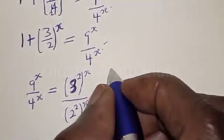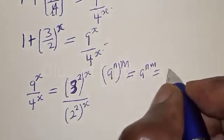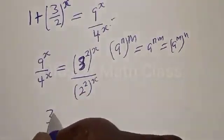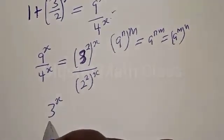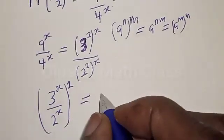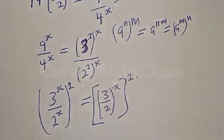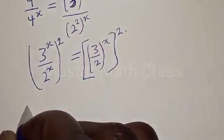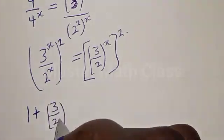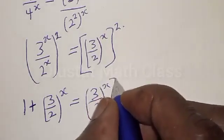Remember, if you have a base raised to power n raised to power m, that is the same as the base raised to power nm. So the right-hand side becomes (3/2) raised to power x all squared, which equals (3/2) raised to power 2x. Returning to the equation: 1 plus (3/2) raised to power x equals (3 divided by 2) raised to power x, all squared.